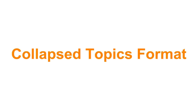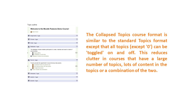Collapsed topics course format is similar to the standard topics format, except that all topics, except zero, can be toggled on and off. This reduces clutter in courses that have a large number of topics, lots of content in the topics, or a combination of the two.